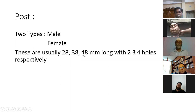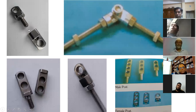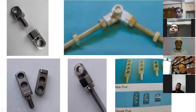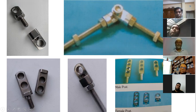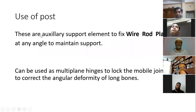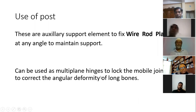Posts come in two types: male and female. They are usually 28, 38, or 48 millimeters long with three or four holes respectively. You can see the male post and female post — one-hole, two-hole male post, two-hole female post. Here is a female post connected with a threaded rod to make part of a hinge. Here are the four-hole male post, three-hole male post, two-hole male post, and female posts. Posts are auxiliary support elements used to fix wire, rod, or plates at an angle to maintain support. They can be used as multi-planar hinges to lock a mobile joint or correct angular deformity of long bones.